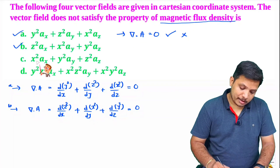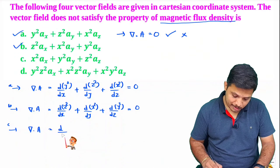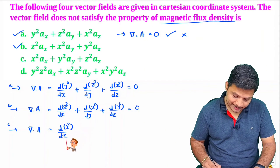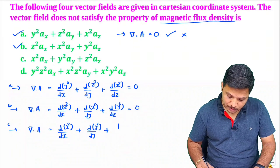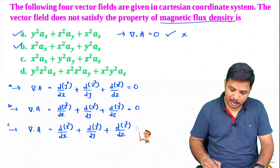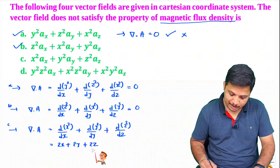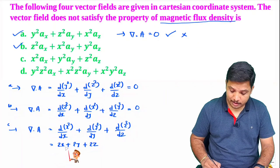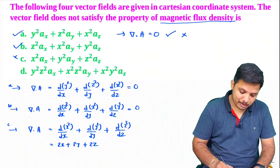Now, calculating the divergence of the third vector: differentiation of the x-component (x²) with respect to x, plus differentiation of the y-component (y²) with respect to y, plus differentiation of the z-component (z²) with respect to z. Solving this gives 2x plus 2y plus 2z. This is not zero, meaning this vector does not satisfy the condition del dot B equals zero.